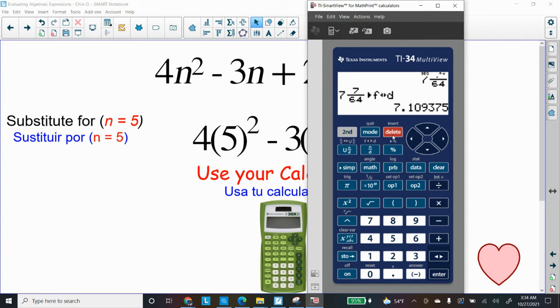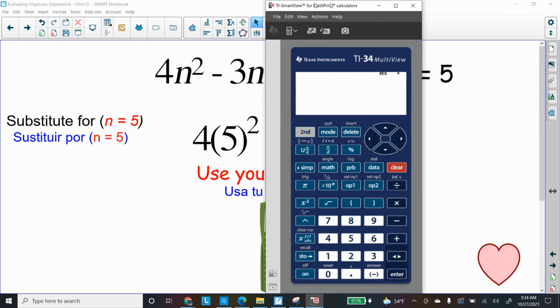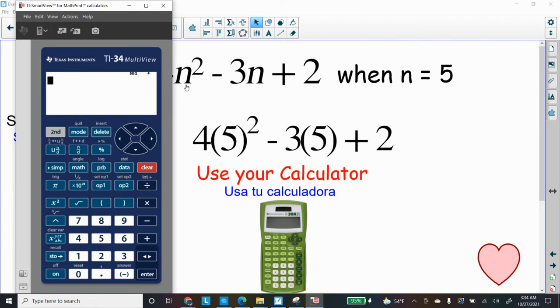Okay, so now let's get our calculator, Dr. Rob. Let's clear all this stuff out. Clear. Now let's type in our work. We're going to type 4(5) x² button, minus 3(5) plus 2.